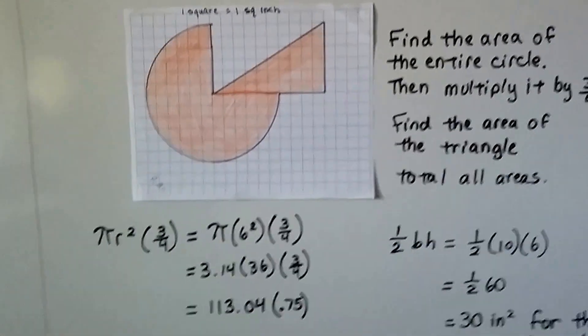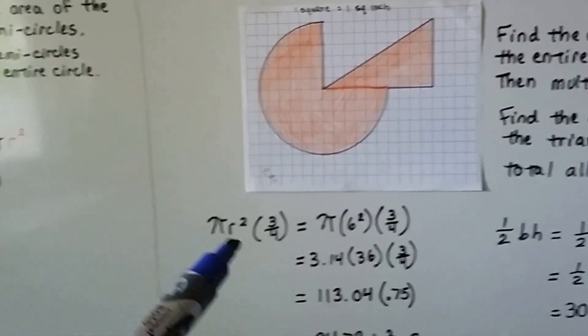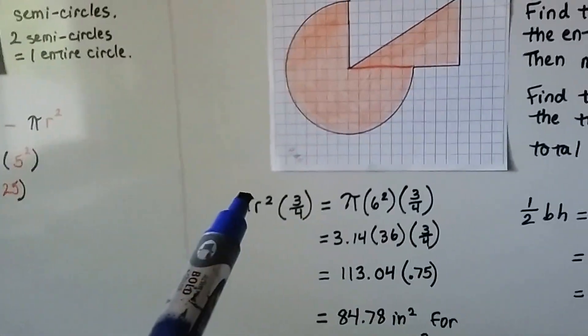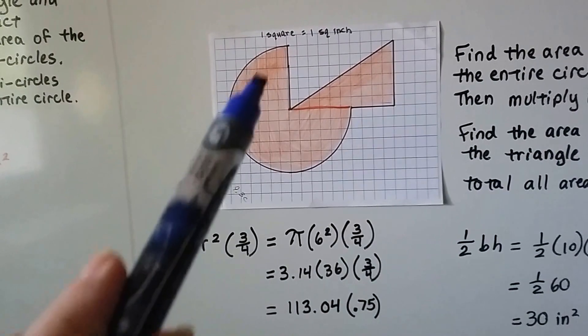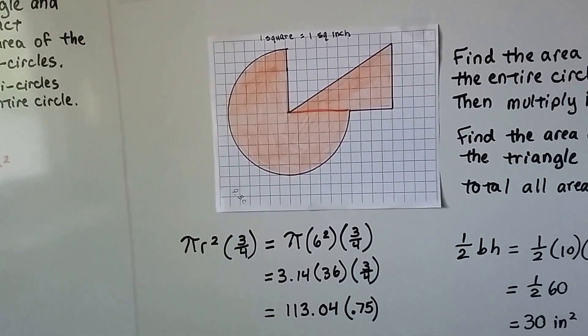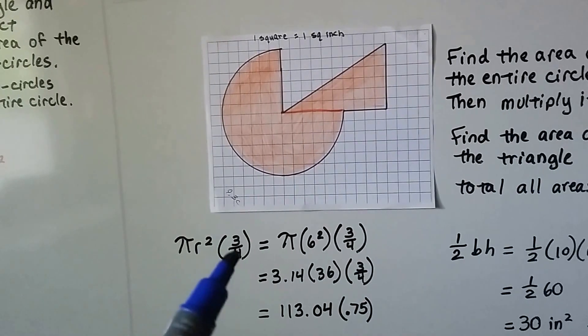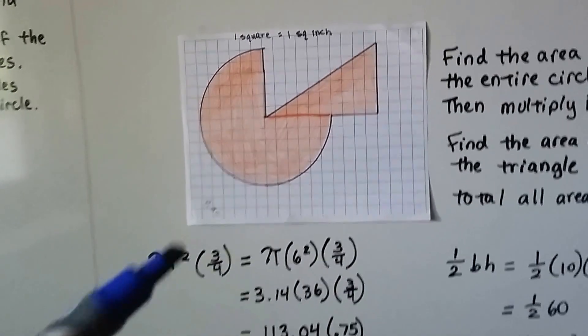Then we're going to find the area of this triangle and total the two areas. Area of a circle is πr². We're going to multiply that times 3/4 to get this area of this circle because it's not a complete circle.